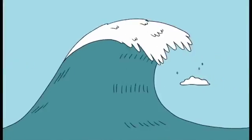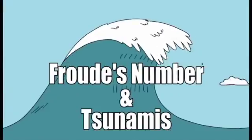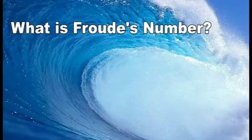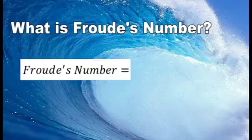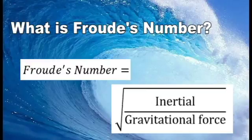Coming to you from ME3340 at Georgia Tech, this is Froude's Number and Tsunamis. So first, what is Froude's Number? It's a dimensionless representation of the square root of inertial force over gravitational force. This ratio indicates gravity's influence on fluid flow.